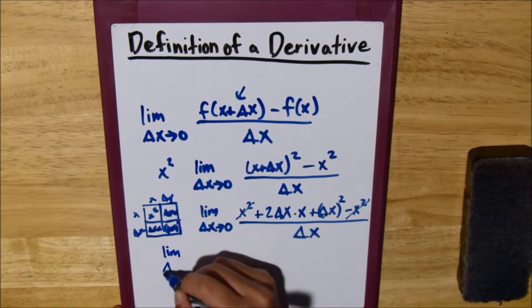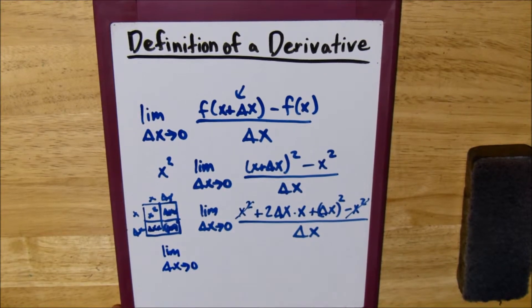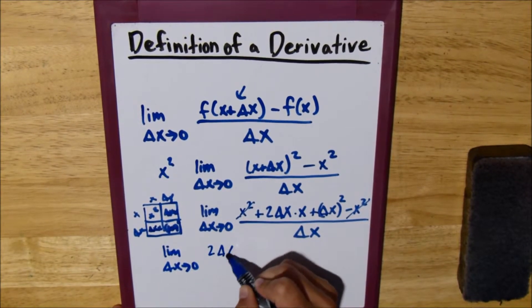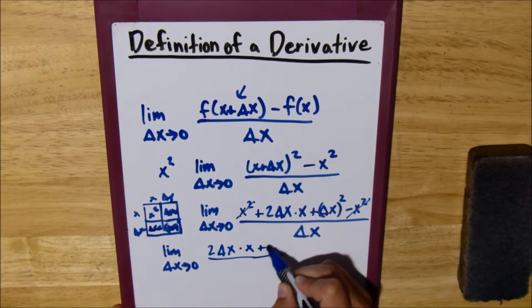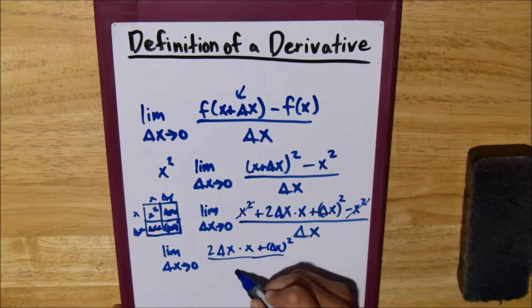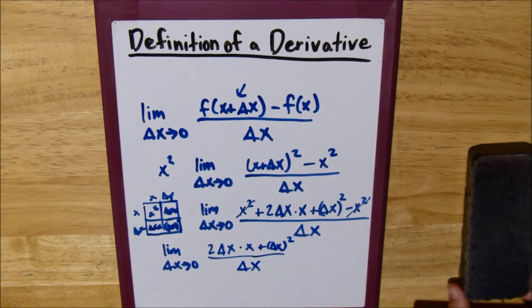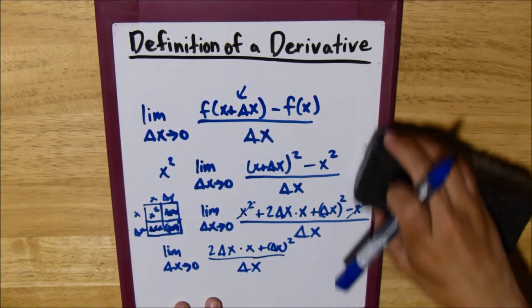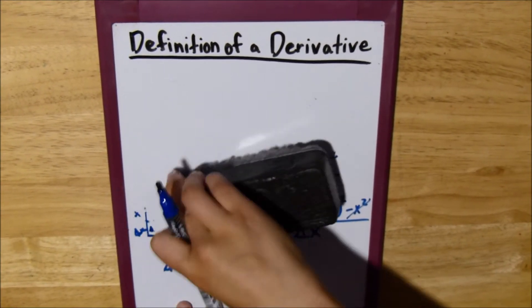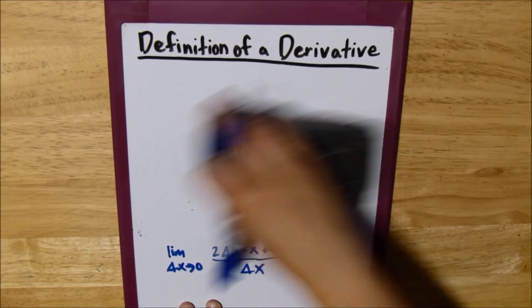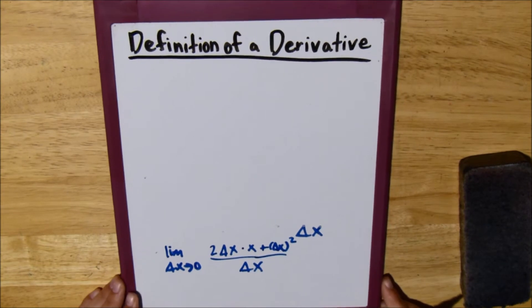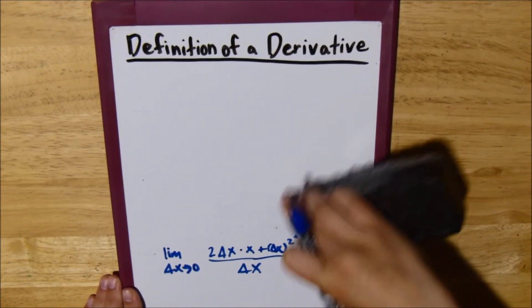We'll write our limit. Then, we have 2 delta x times x plus delta x squared over delta x. Let me just rewrite everything up at the top. I fear we're going to run out of room. Alright.